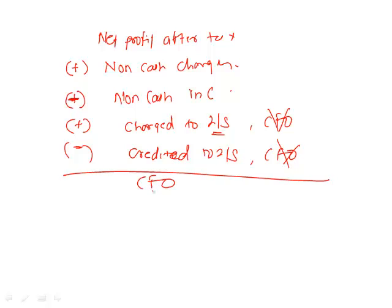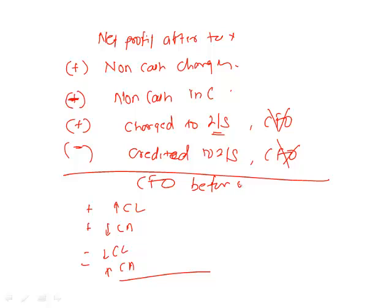Once this is done, we get cash flow from operations before working capital changes. Then: plus if current liability increases, plus if current asset decreases, minus if current liability decreases, and minus if current asset increases. After these adjustments, we arrive at the final cash flow from operations.